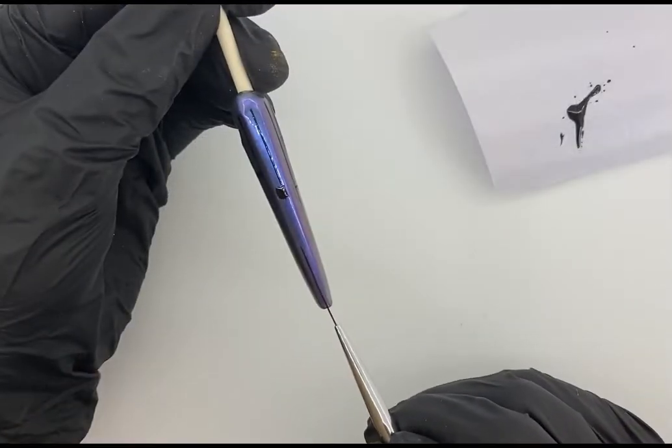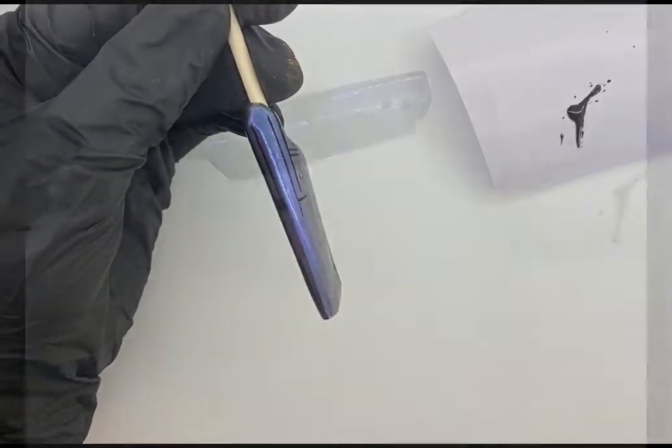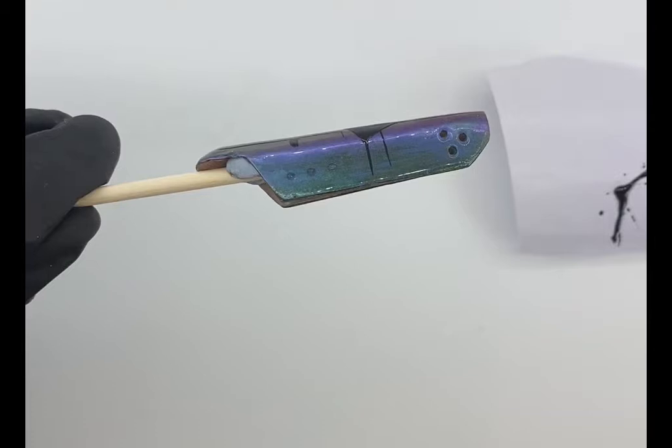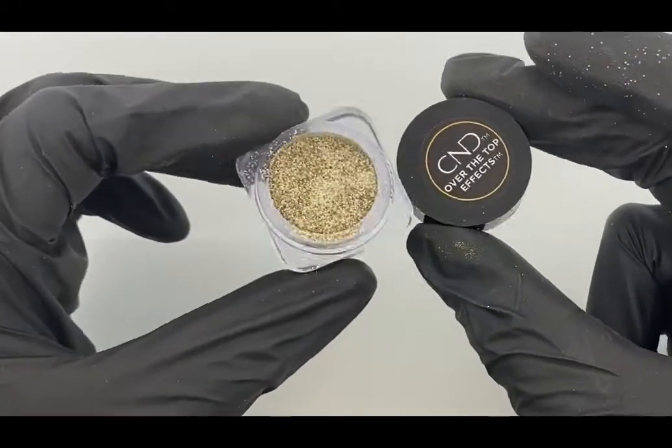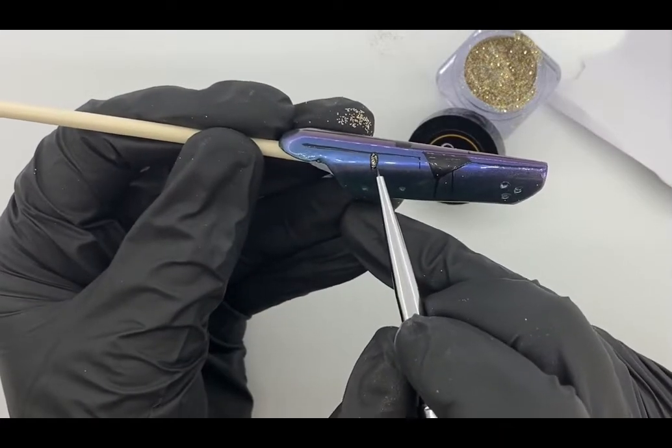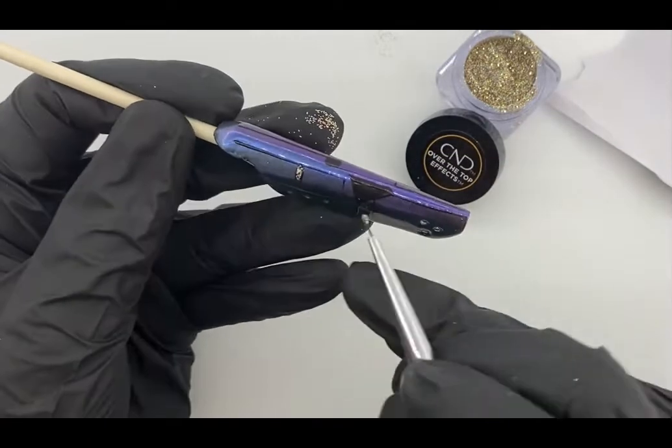Using gel polish I created the circuit board. You can mix C&D's over the top products with your gel top coat to create some fantastic effects. I use Gold Party for this. I'm going to use this technique to go over some of the black to really make it pop.